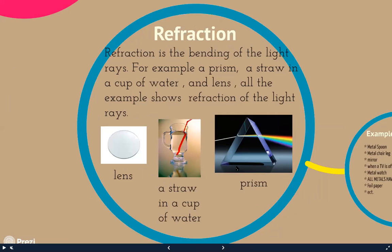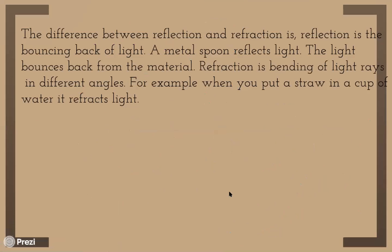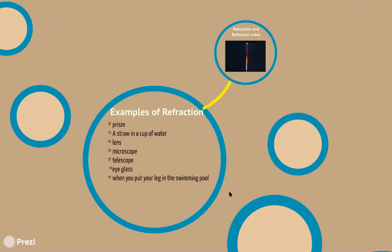The difference between reflection and refraction: reflection is the bouncing of light — metal spoons reflect light, and the light bounces back from the material. Refraction is the bending of light at different angles. For example, you put a straw in a cup and you see the refracted light. Examples of refraction include prisms, straws in a cup, and lenses.